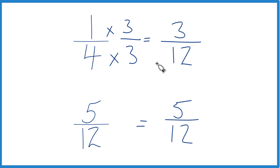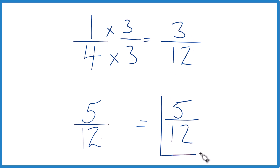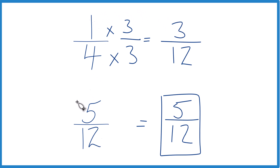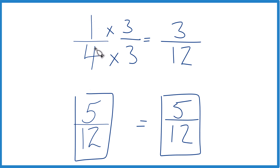Now, with the same denominator, compare the numerators. 5 is greater than 3, so 5/12 is greater than 3/12. And since 3/12 and 1/4 are equivalent — they're the same value — 5/12 is greater than 1/4.